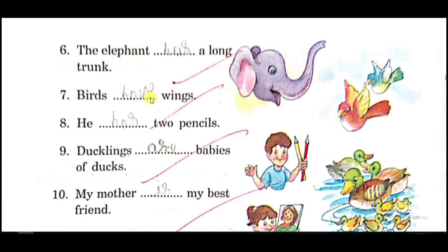Number seven: Birds have wings — after 'birds' we use have. Number eight: He has two pencils — here we use has. Number nine: Ducklings are babies of ducks — here we use are. Number ten: My mother is my best friend — here we use is.